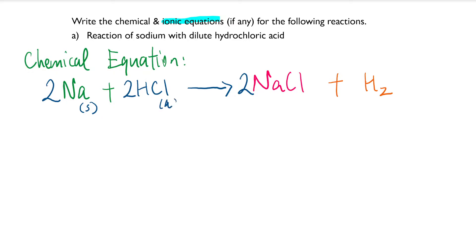HCl, we know it's a solution, so it's aqueous. Sodium chloride here is aqueous as well. You might think sodium chloride is a salt — but you're adding hydrochloric acid to sodium metal, so the salt formed is aqueous. You can refer to chapter 11 for that. And hydrogen gas is obviously a gas.